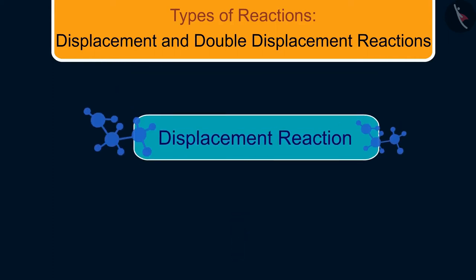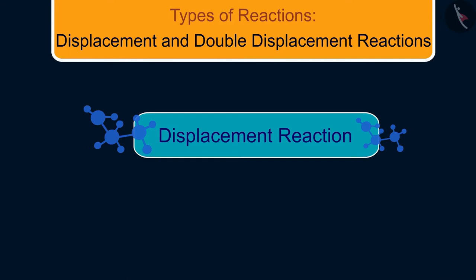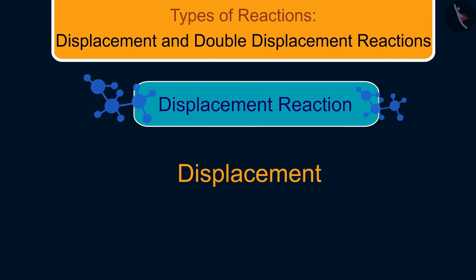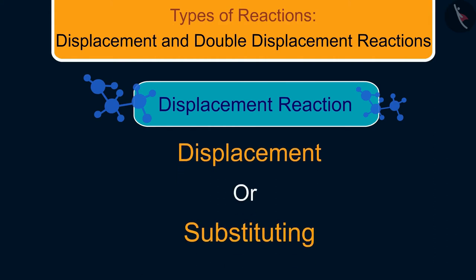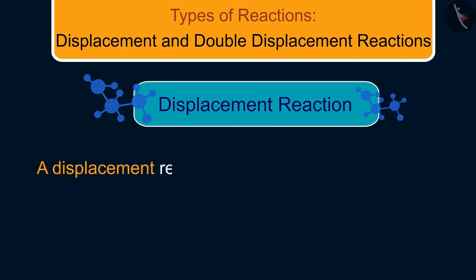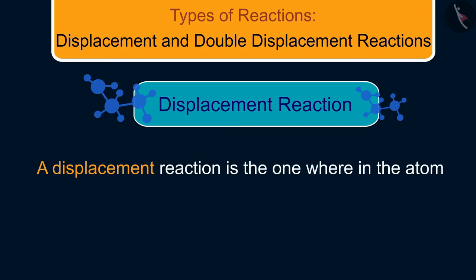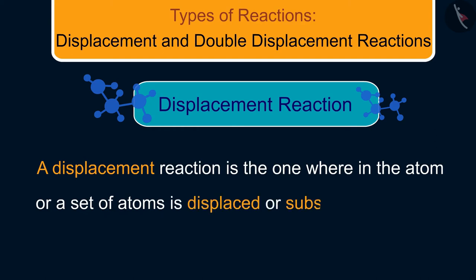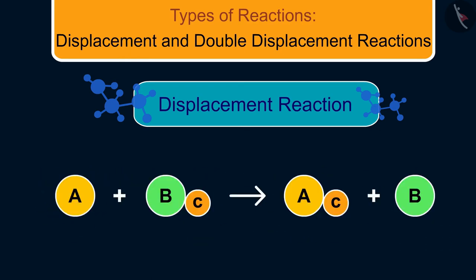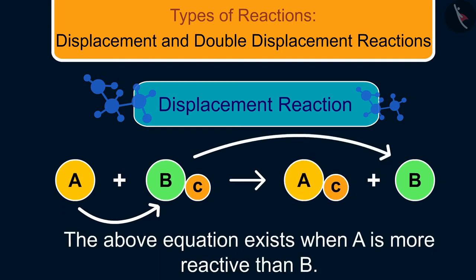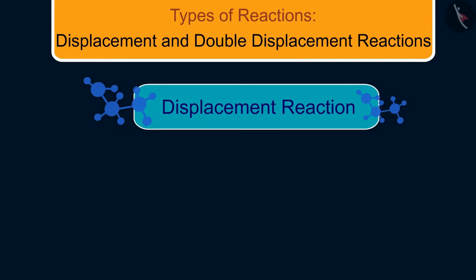Our first topic is displacement reaction. The word 'displace' tells us that it means we are displacing or substituting something. A displacement reaction is the one wherein an atom or a set of atoms is displaced or substituted by another atom in a molecule. For example, suppose A is more reactive than B, then A can displace B from BC and form AC.